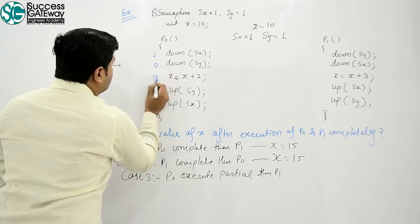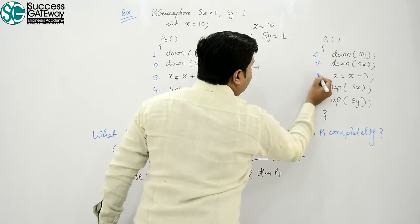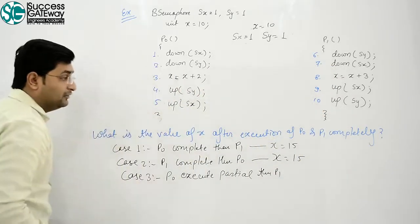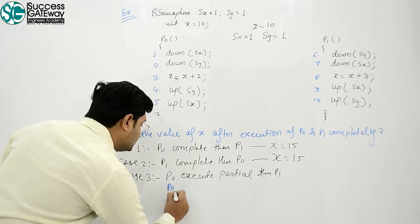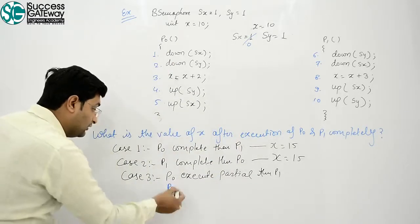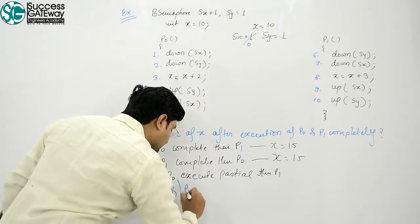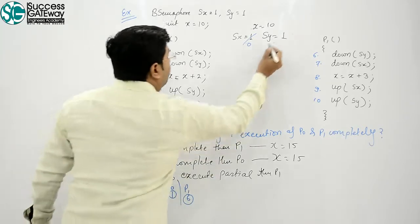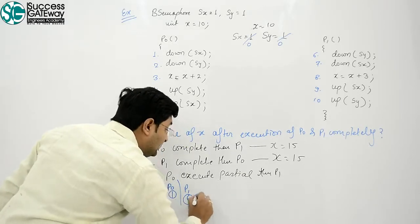If P0 downs Sx to 0, then preempts. P1 tries down Sy, making it 0. P1 then tries down Sx.